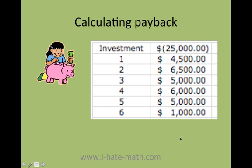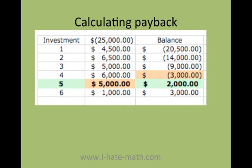So how do I calculate the payback? Very easy. The first thing we need to do is figure out what the balance is every year. As you can see here, year one we got four thousand five hundred dollars. Since we recovered that investment, my balance now is going to be twenty thousand five hundred dollars. I get this by subtracting the investment with the amount I just received to get the balance. The second year I received six thousand five hundred dollars — that becomes my new balance. I do this until I get a positive value.